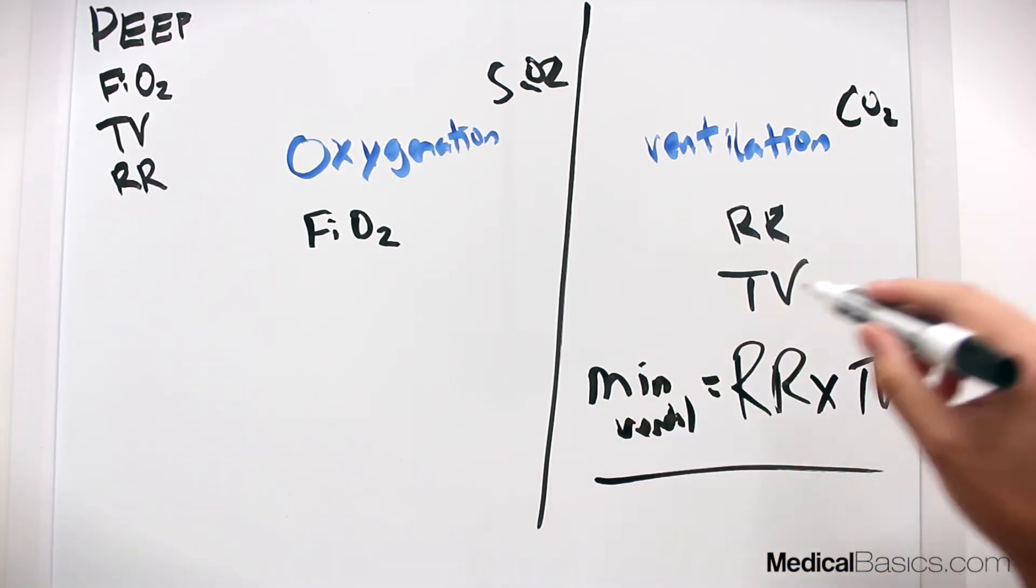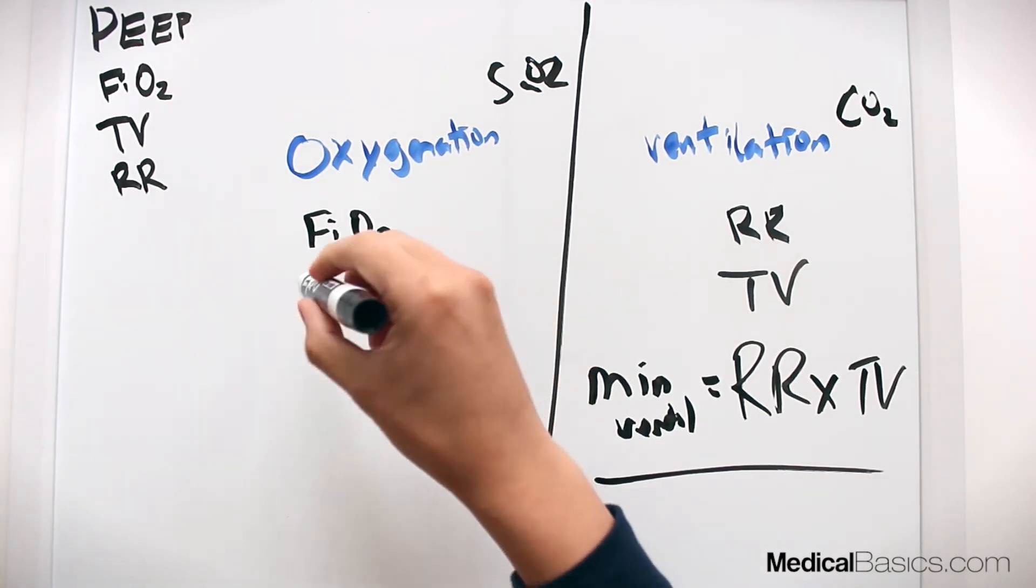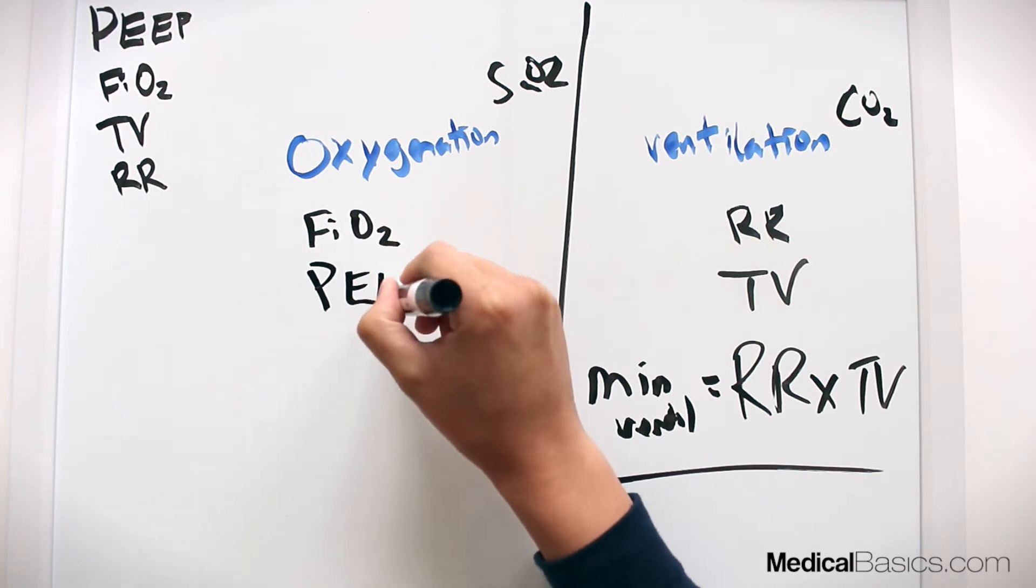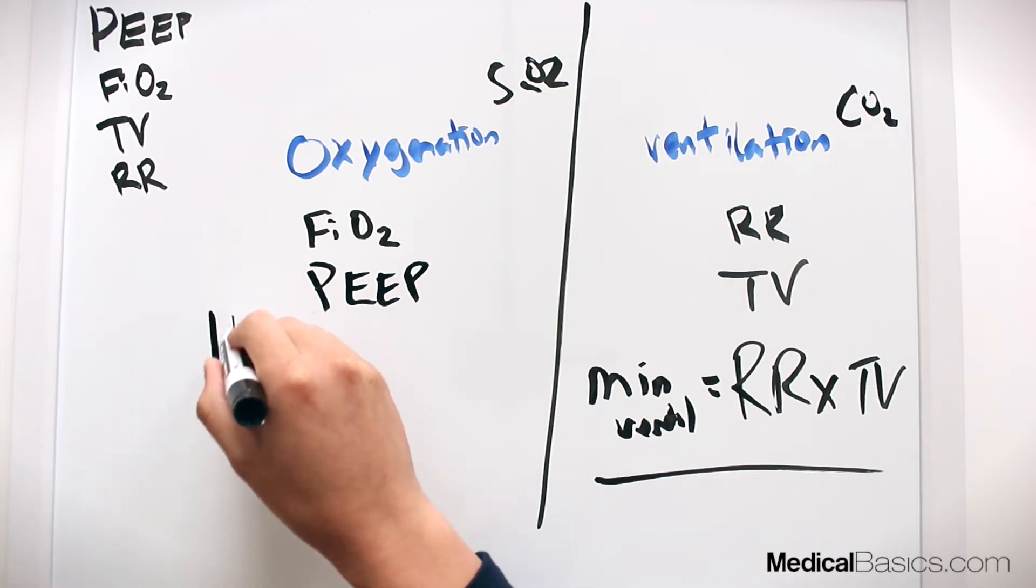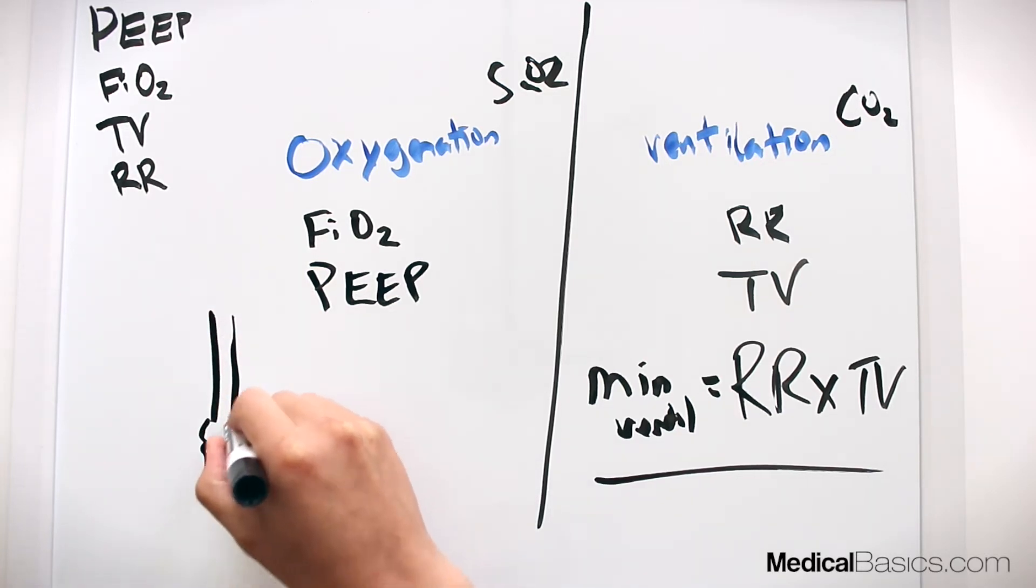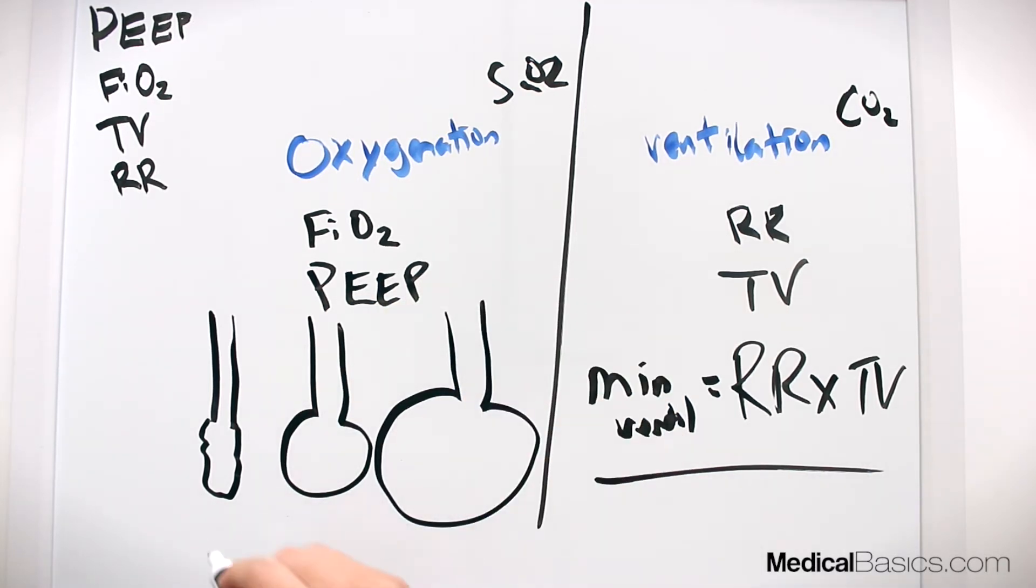That's how you can change CO2. And then for oxygenation it's going to be PEEP. So PEEP as well as FiO2, if you can increase these then you can increase your oxygenation. And the best way to explain this is like this: if we have different alveoli and this, let's say, is a PEEP of zero, this is a PEEP of five, and this is a PEEP of fifteen.